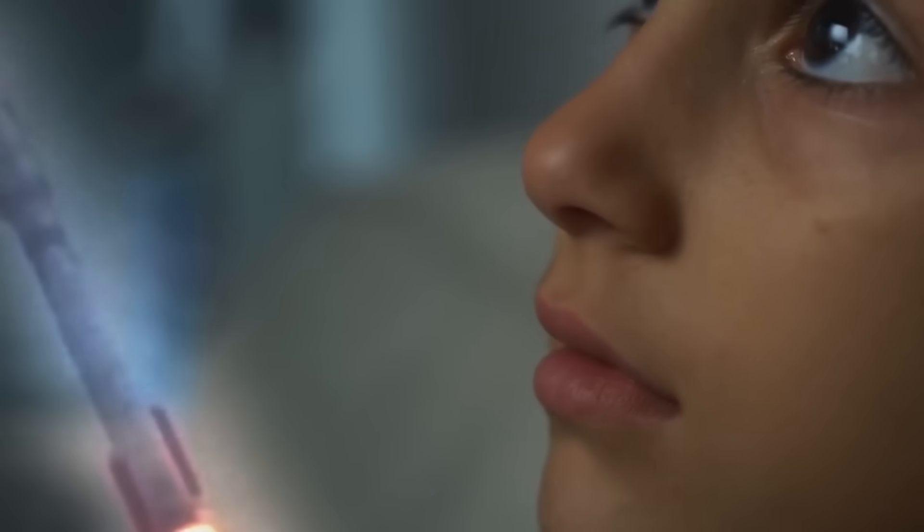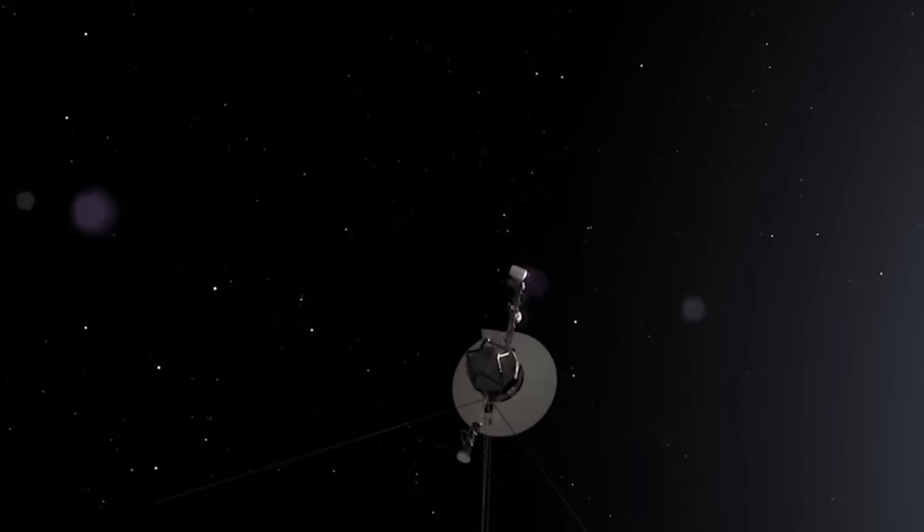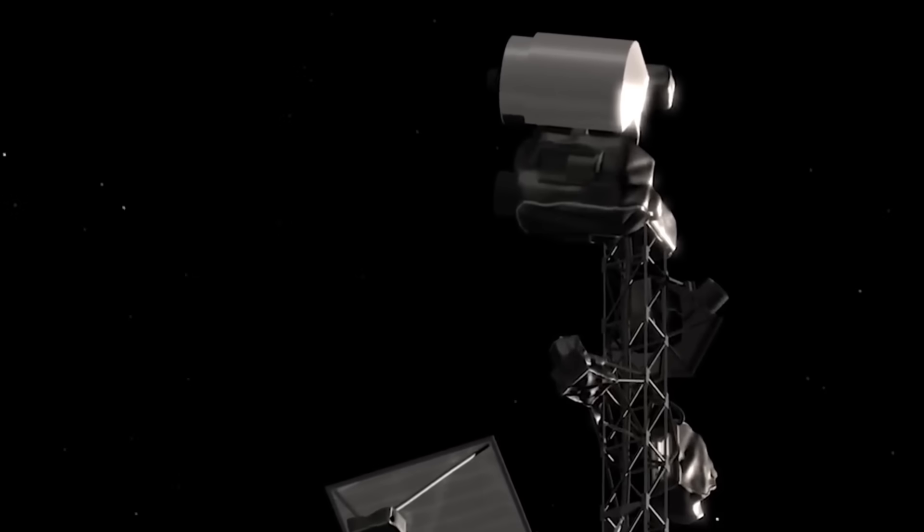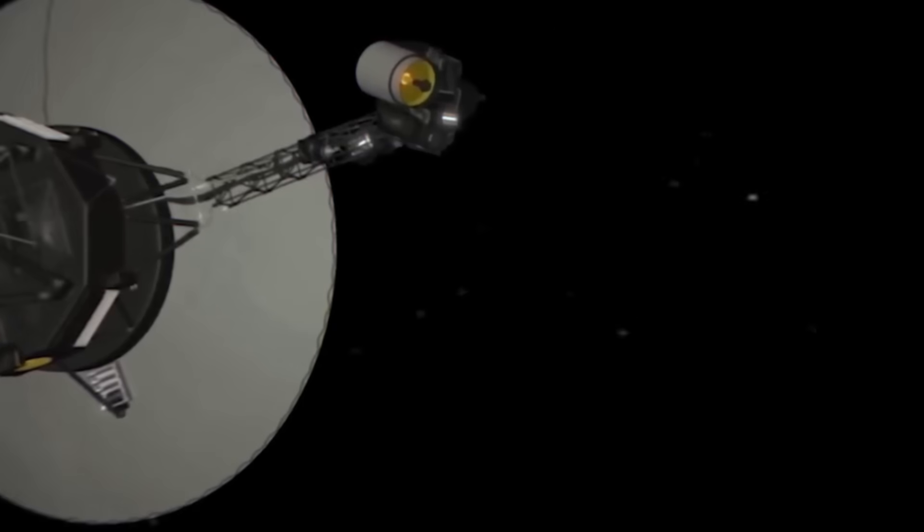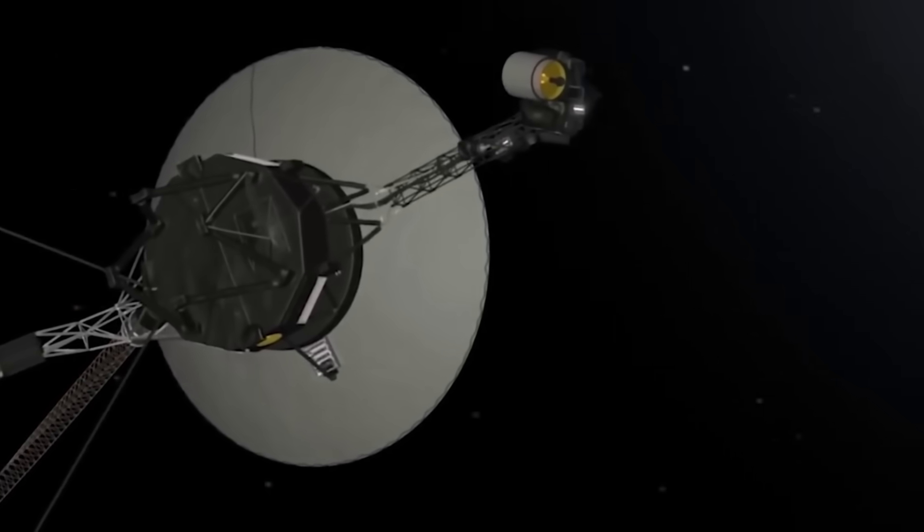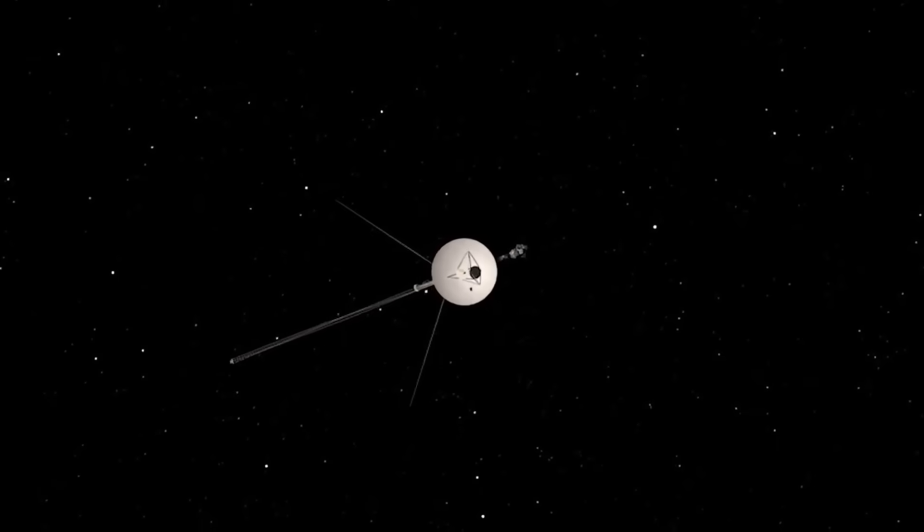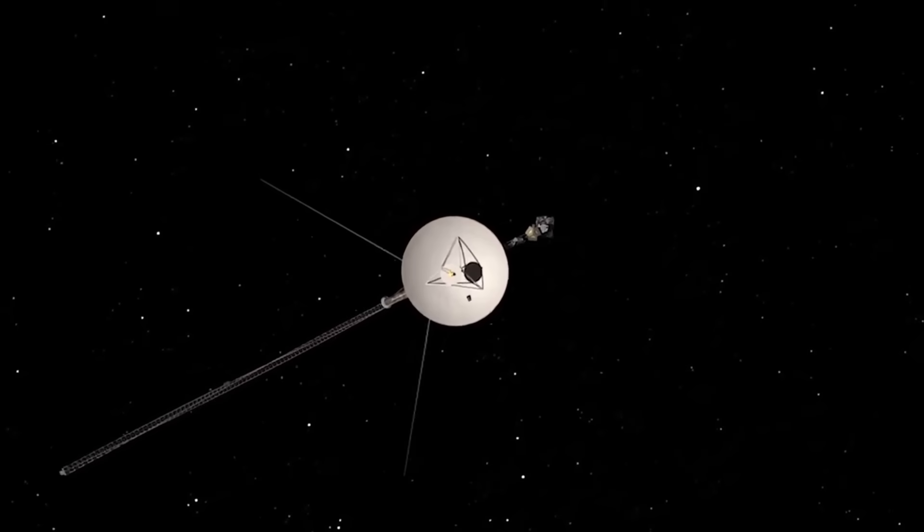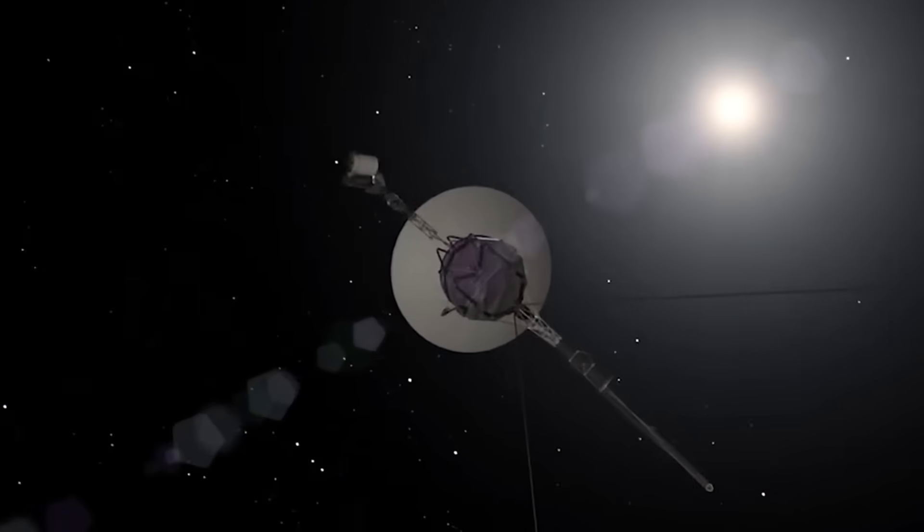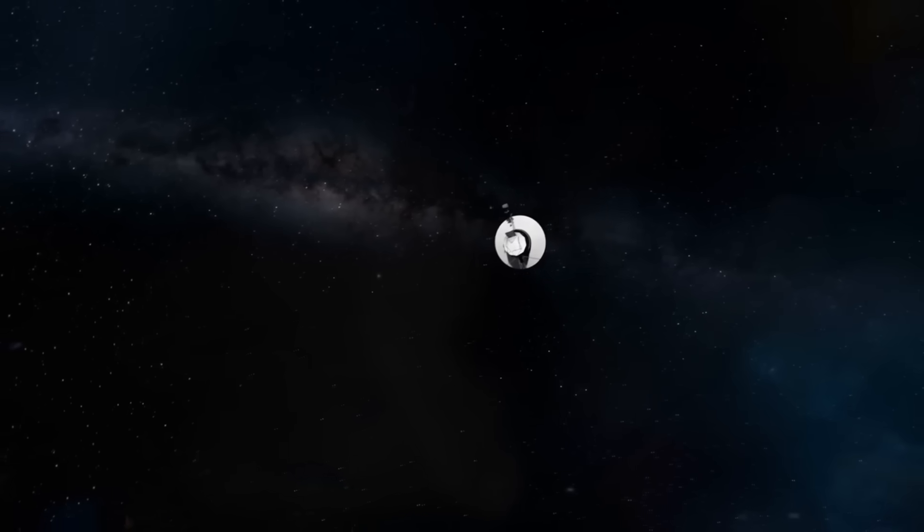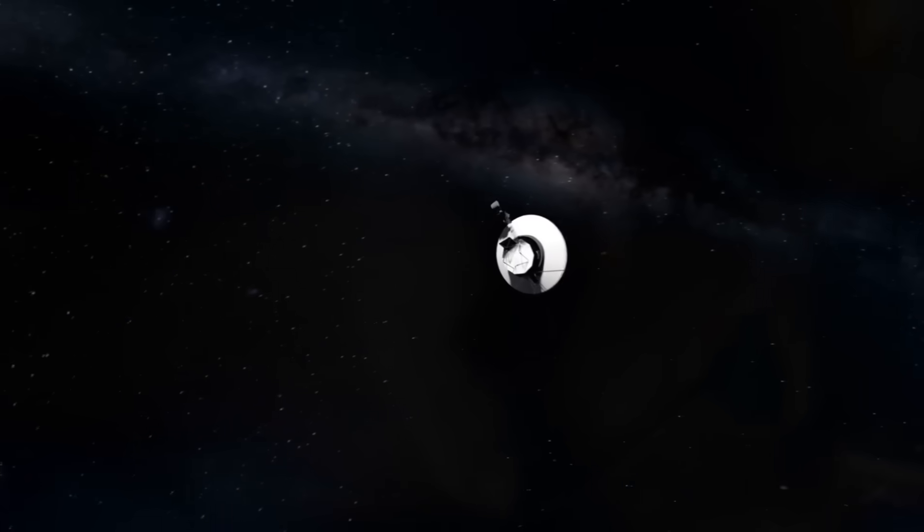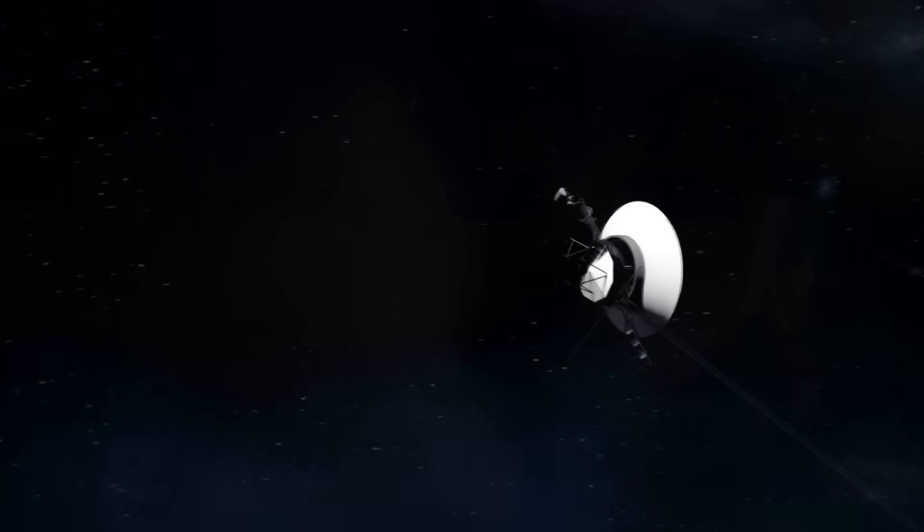But now, nearly 24 billion kilometers from home, something has happened. Something we were not prepared for. Voyager 1, the furthest human-made object in existence, has sent back a signal that defies every known rule of logic. Its orientation readings make no sense, its telemetry is corrupted, and yet we still receive its voice, its whispers from the dark. How is that possible? What is really happening at the edge of our solar system? Is this just a technical glitch or something far more mysterious?